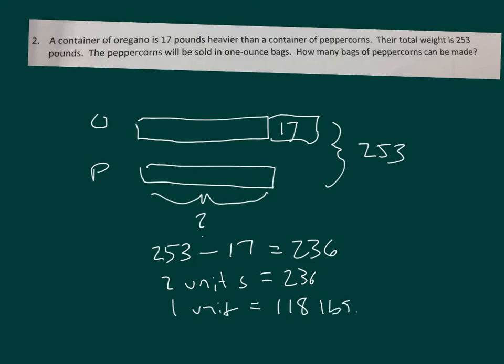That's 118 pounds. But we need ounces. Work this out. 118 times 16, because there's 16 ounces in a pound. Pause the video while you do your work.